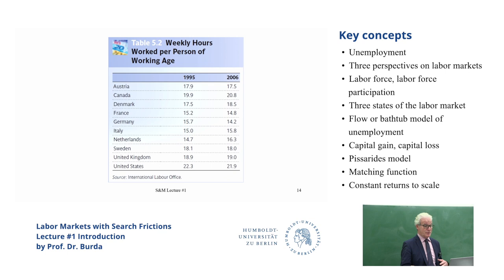This model is extremely powerful. It already explains quite a bit—for example, why people in Europe work less than in the United States, because the net return to work is higher in the United States, Canada, and Switzerland. That comes from the fact that taxes are lower—it's the net real wage that matters, not the gross real wage. We're looking at hours per capita of working age, and there are huge differences decomposed into hours per person who are actually working—the intensive margin—times the number of people actually working in the pool—the extensive margin.